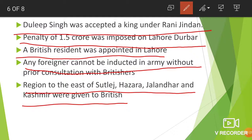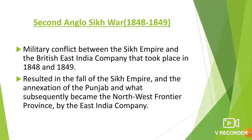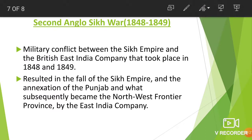After the First Anglo-Sikh War, the Second Anglo-Sikh War took place from 1848 to 1849. It was a military conflict between the British East India Company and the Sikh Empire. The result was the complete fall of the Sikh Empire.